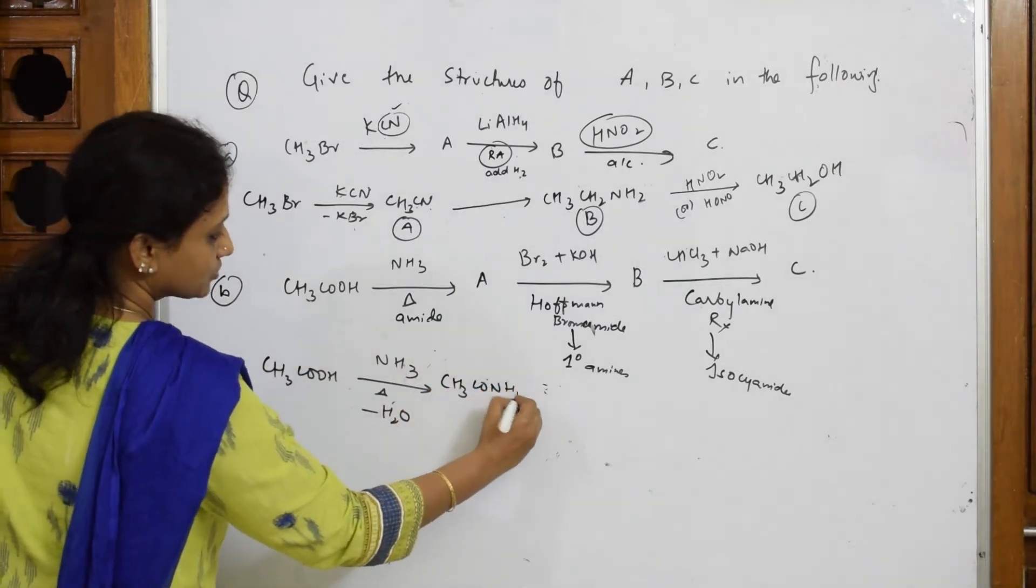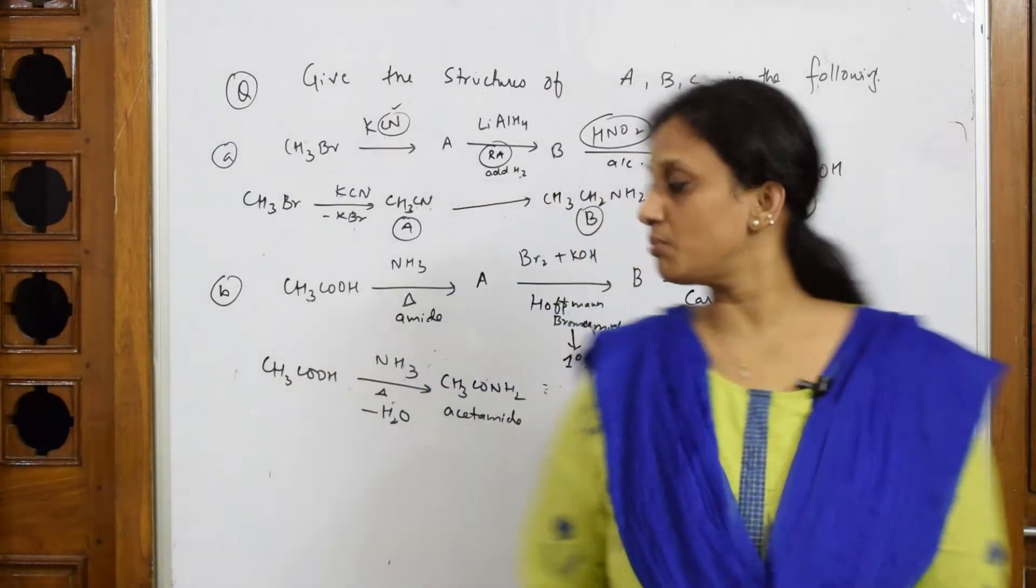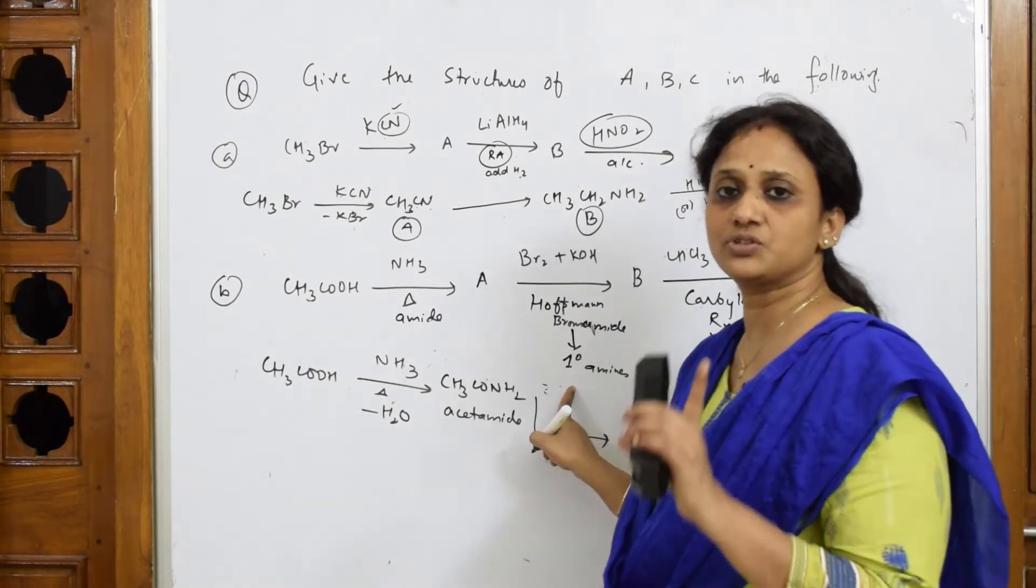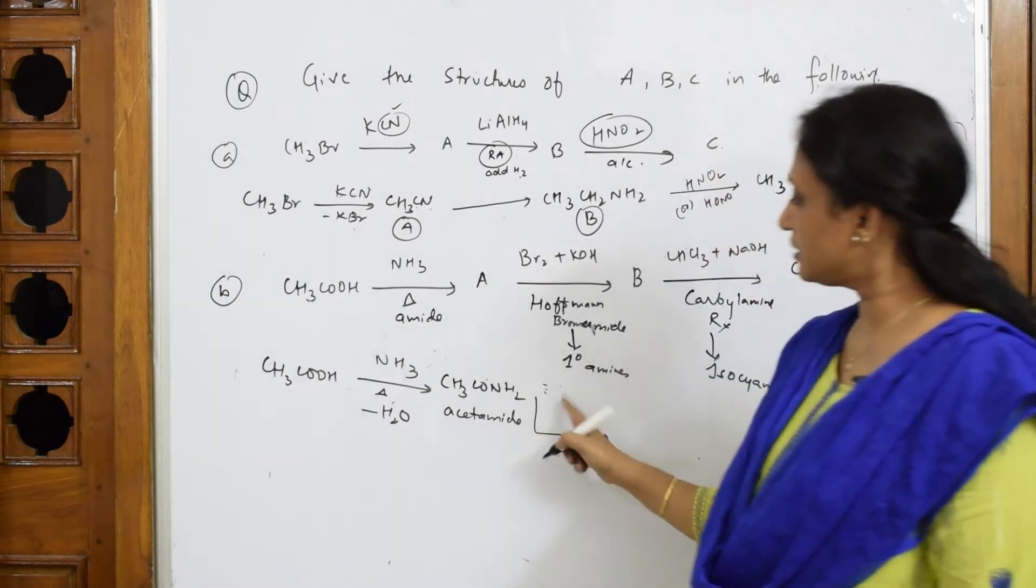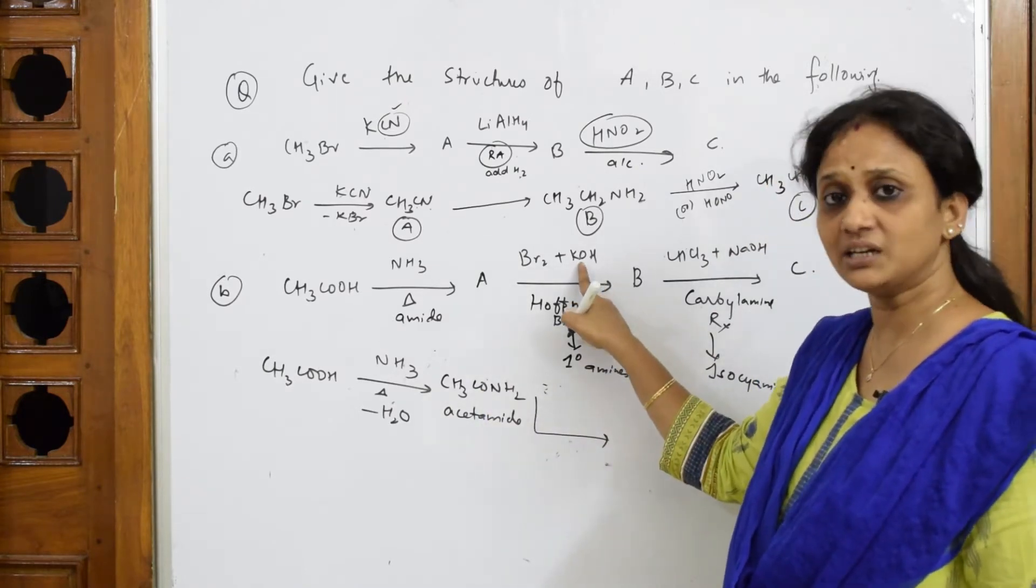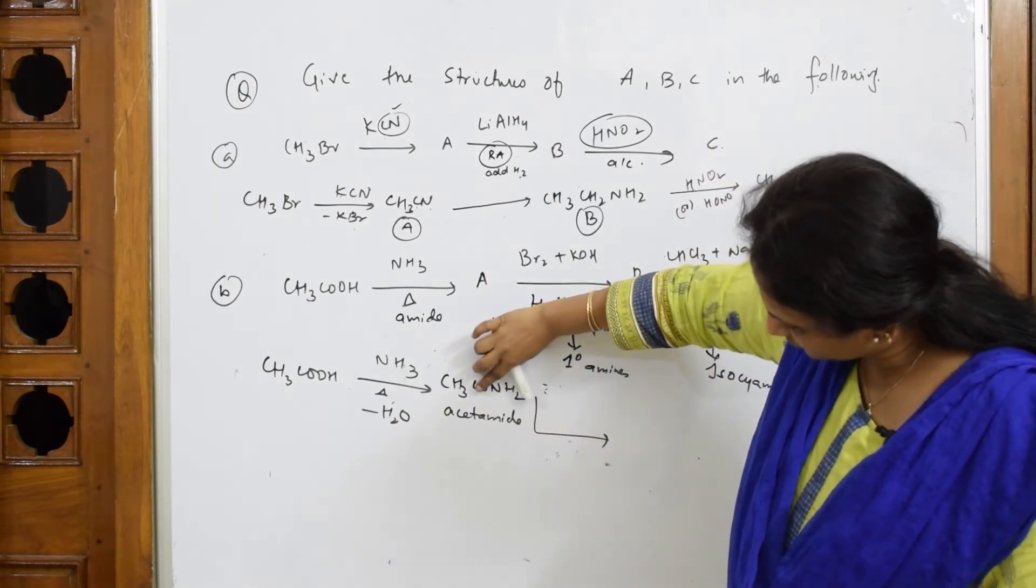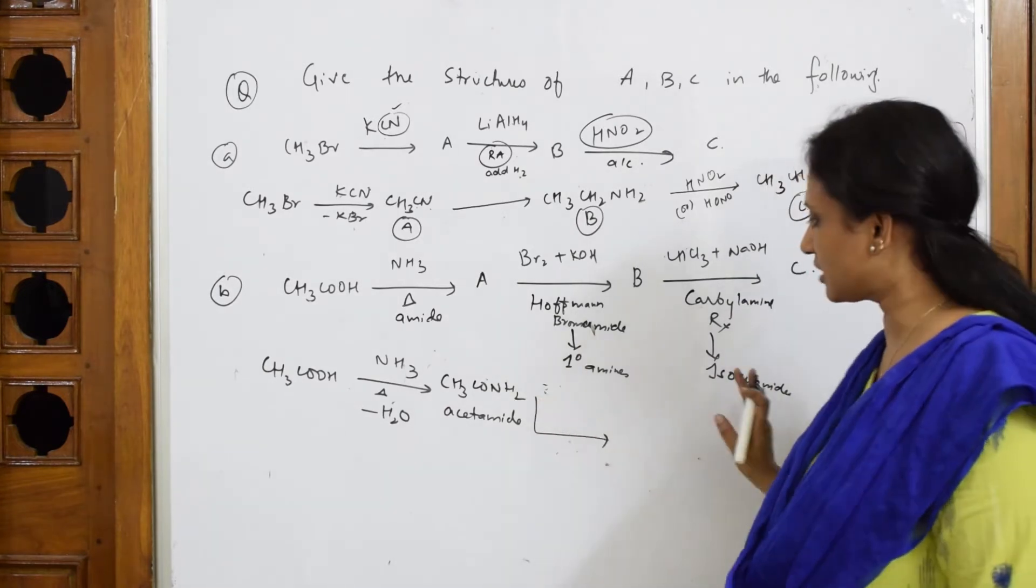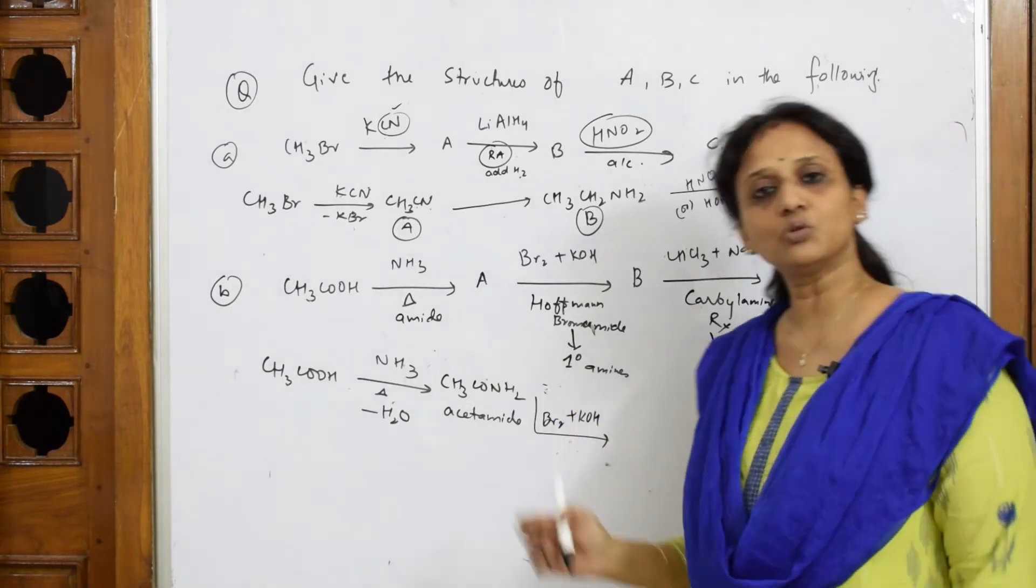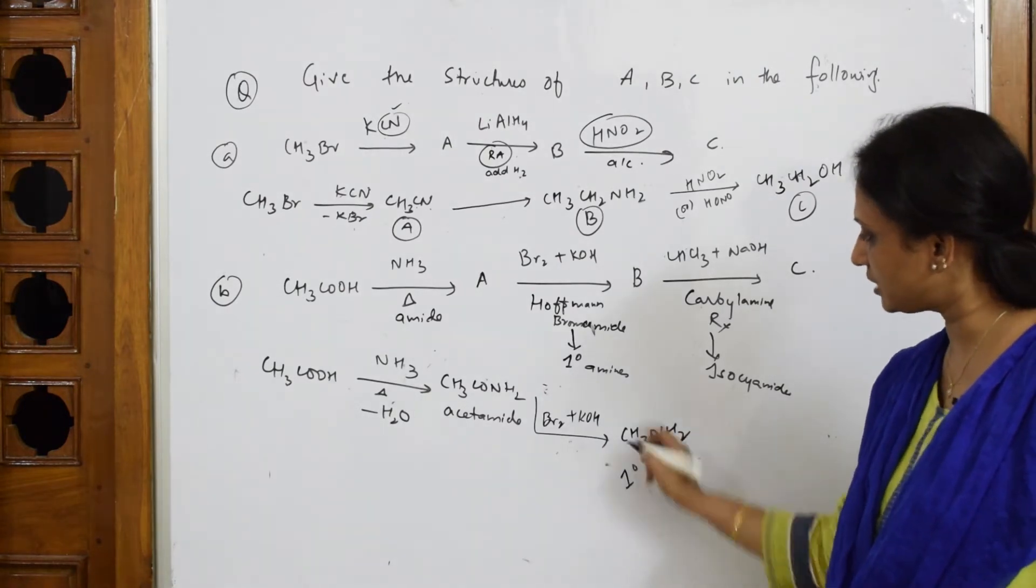Then Hoffmann's bromomide reaction will prepare me primary amine, one carbon less. Remember that - primary amine. This carbon is going to come out as potassium carbonate. Just take like this. This will get eliminated as K2CO3. You will just note this as byproducts, but concentration will go more on the main products. So you get CH3NH2. I got primary amine.